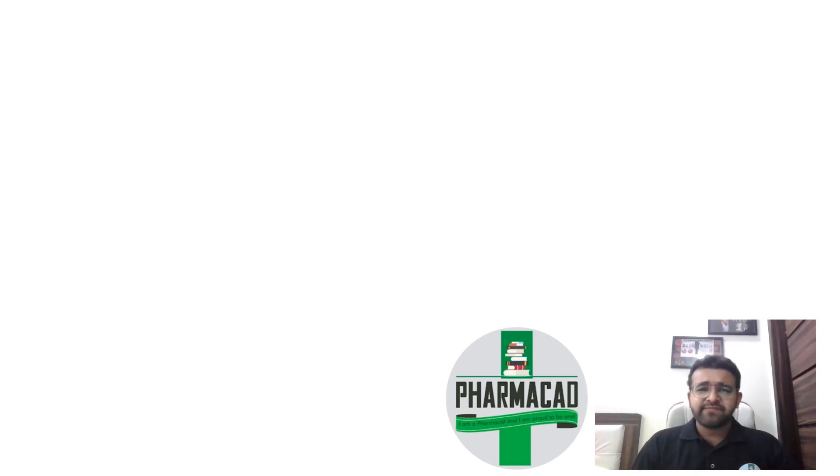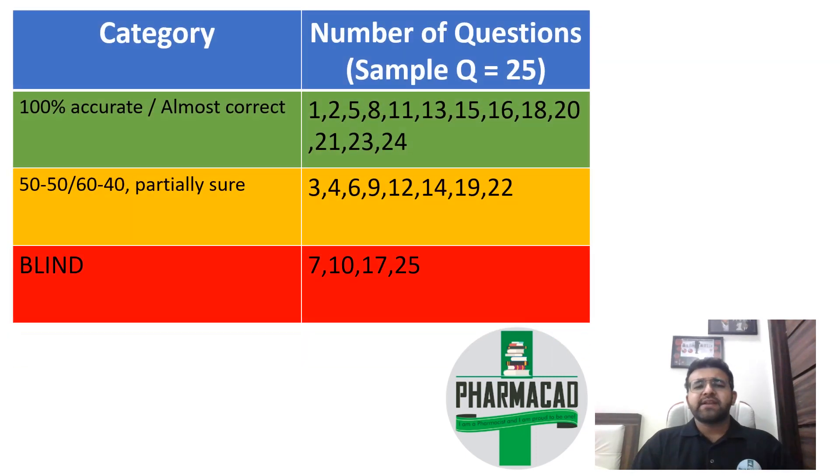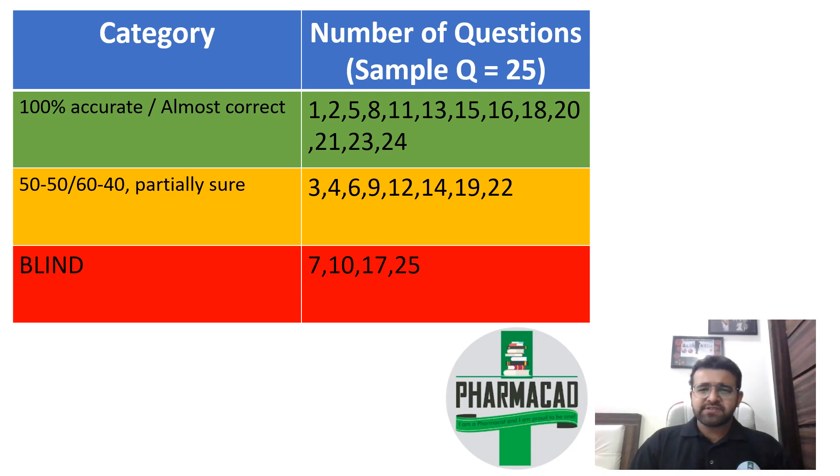When you are attempting those questions — whatever number of questions you attempt out of 125 — when you start attempting those questions, there are total three categories. Category number one is 100% accurate and almost correct questions.